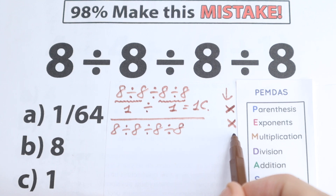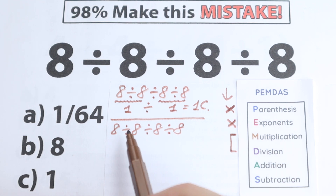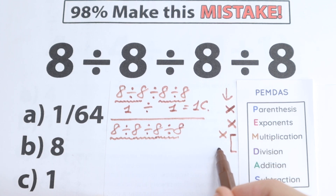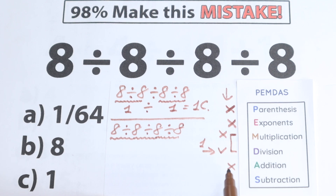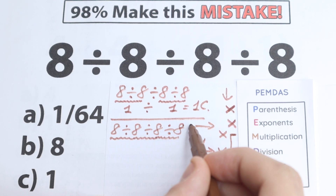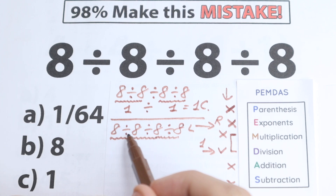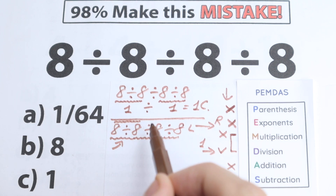The next step is multiplication and division. Many students make the mistake of thinking they must multiply first, but we need to find all multiplication and division signs. Here we have only division signs — no multiplication sign at all. We can also skip addition and subtraction. The correct order according to PMDMC is from left to right. The first division sign from left to right: 8÷8 = 1.